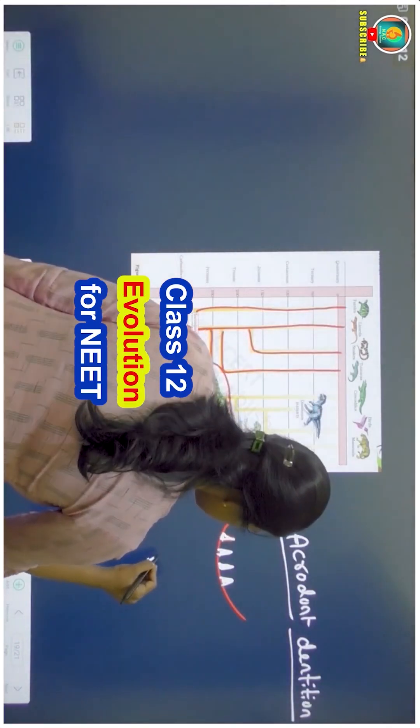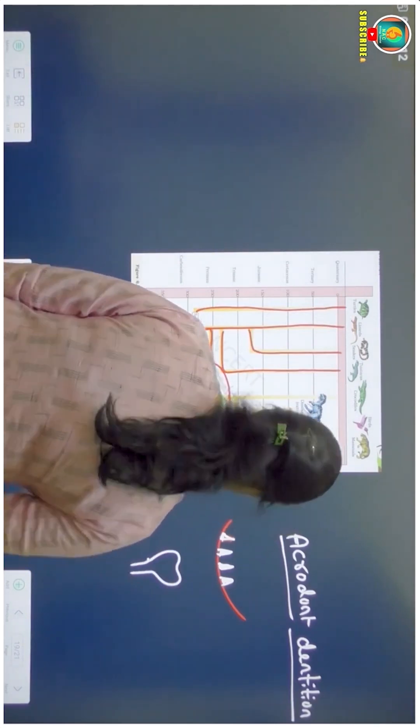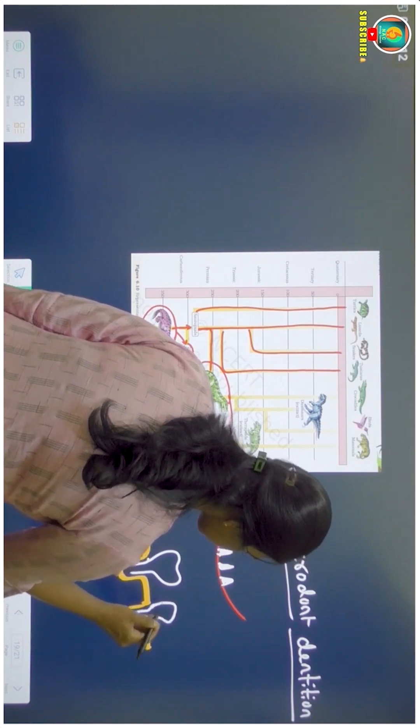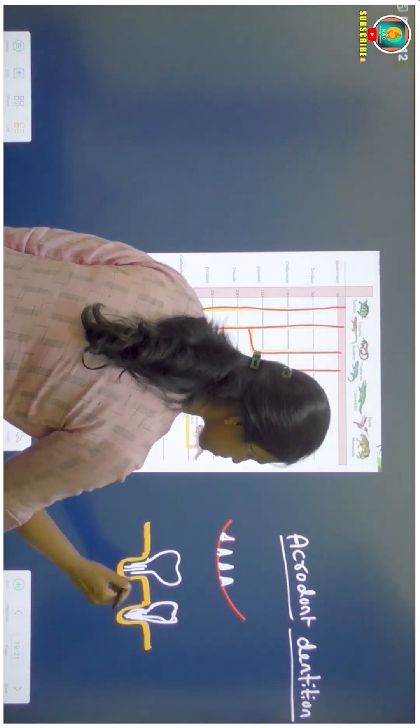imagine this is our tooth. This tooth is present in a structure, a socket-like structure. In this socket our tooth is embedded. It has a root that will be fixed firmly.